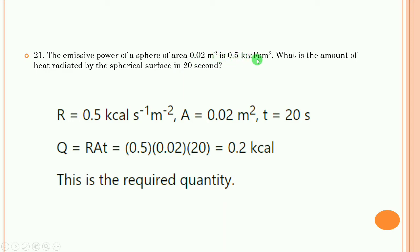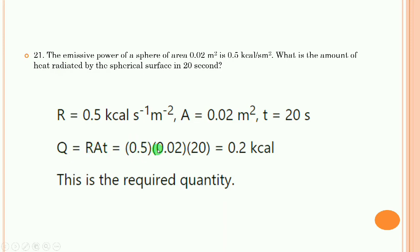Problem 21: The emissive power of a sphere of area 0.02 m² is 0.5 kcal/s·m². Find the heat radiated in 20 seconds. Given: R = 0.5 kcal/s·m², A = 0.02 m², t = 20 s. Using Q = R × A × t = 0.5 × 0.02 × 20 = 0.2 kcal. That is the final answer.